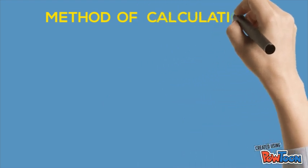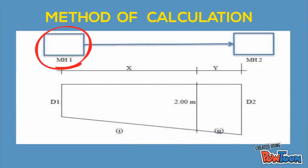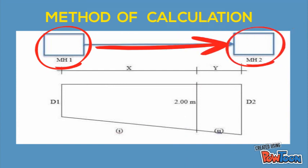First step, we need to identify which manhole we want to calculate their length of excavation. Then, find the ground level and invert level from one manhole to another one manhole.